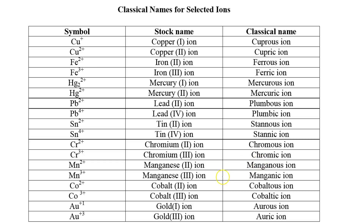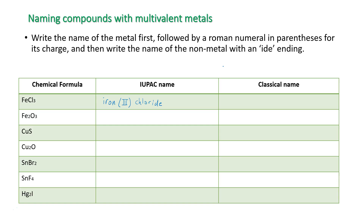It's not too hard to find a table like this online. When you're first learning to name compounds, you need to refer to a table like this if you need to use the classical system. So for FeCl₃, because the iron has a charge of plus 3 — the higher charge — it would be called ferric chloride.